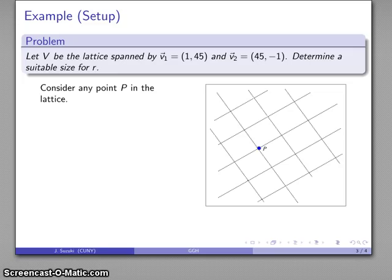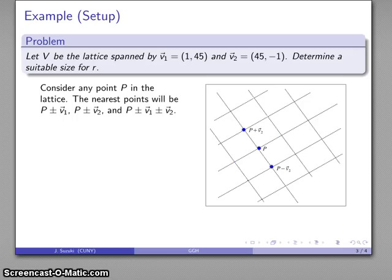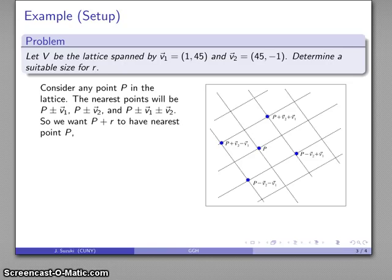Let's take a look at those nearby points. The closest points to P are going to be P ± V1, P ± V2, and possibly P ± V1 ± V2. There's going to be a number of close points in the lattice, and we want P plus whatever our random noise vector is to have nearest point P.